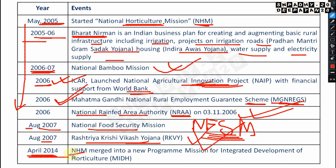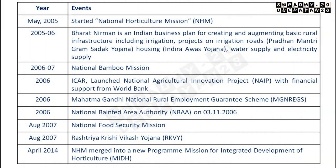In April 2014, the National Horticulture Mission (NHM) was merged into a new program: MIDH — Mission for Integrated Development of Horticulture. So NHM became MIDH. These cover the history of modern agriculture up to 2014. Information from 2014 to the present will be provided in a document in future videos. Thank you and have a nice day.